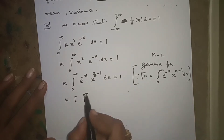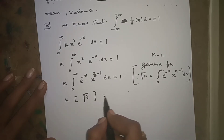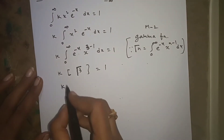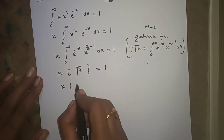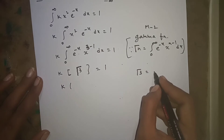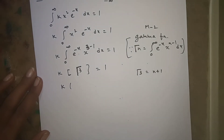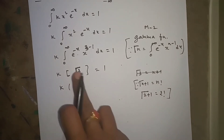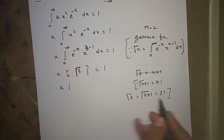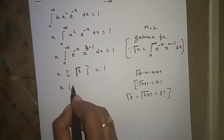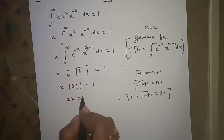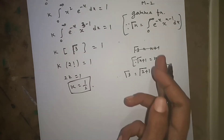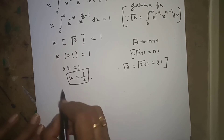Using the gamma function property Γ(n+1) = n!, we have Γ(3) = Γ(2+1) = 2! = 2. So 2k = 1, giving k = 1/2. Therefore the PDF is f(x) = (1/2)·x²·e^(-x).